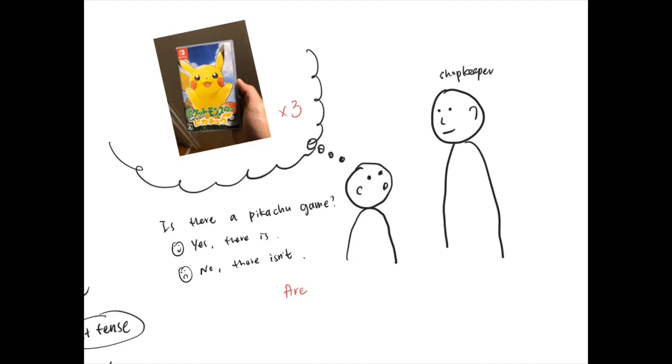So how do you ask the questions? One, two, three. The questions should be like this: are there a Pikachu game? Wait, wait, wait, wait. What is the problem? Are there means more than one, right? That's why to the game you need to add S, correct? So with the S, you cannot use the word are. Instead, here, you should use another one.